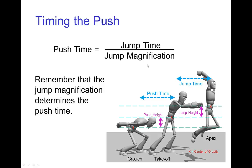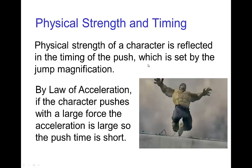The jump magnification also affects the timing when we're pushing off the ground. The push time — the number of frames from the crouch to takeoff — depends on the jump magnification, and the larger the jump magnification, the shorter the push time. This tells us that the physical strength of a character, say some superhero with enormous strength like the Hulk, is reflected in the timing of the push, and that timing is set by the jump magnification. If the character is exerting a huge amount of force to jump an impressive height, then the timing needs to be very short in the pushing off the ground.